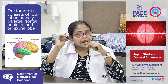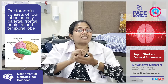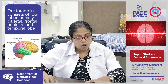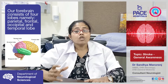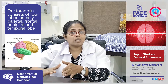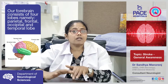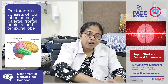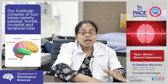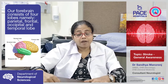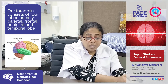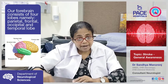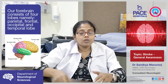The right parietal lobe is responsible for constructional ability — drawing, pictures — and dressing. If there is decreased blood supply to the right parietal lobe, the person cannot dress himself, developing dressing apraxia. The left parietal lobe is responsible for calculation and writing. If the left parietal lobe is affected, a person cannot do calculations, cannot do banking work, and cannot write or draw.